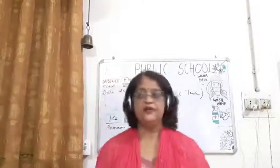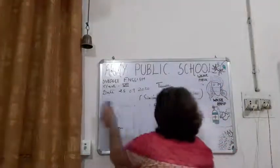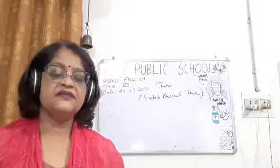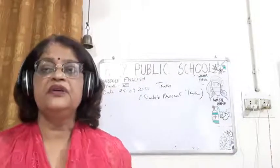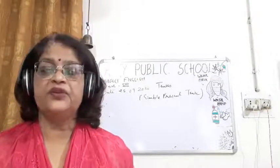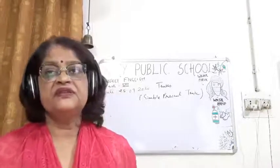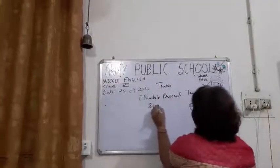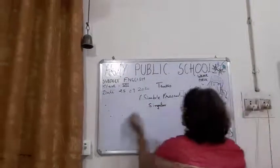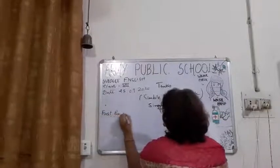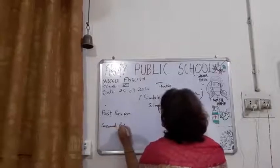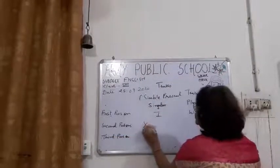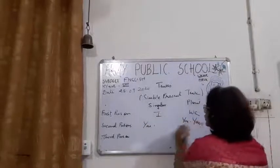Now I will be telling you about first person, second person, and third person. Subject is the pronoun or the noun. First person, second person, and third person are always pronouns, but the verb used will be different. You should know what is the person — first person, second person, or third person. We have two parts: singular and plural. First person singular: I; plural: we.